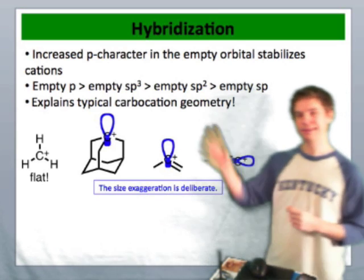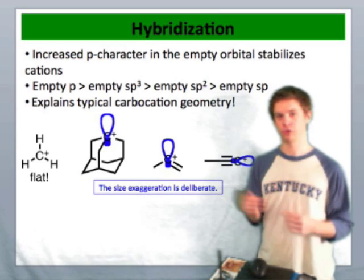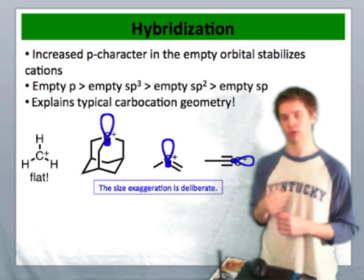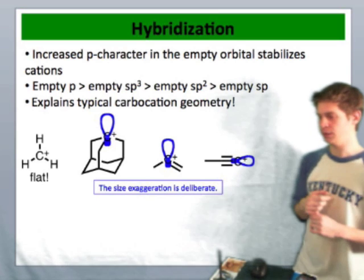This is slightly less stable than the pure 2p orbital because we've introduced s character, pulled that orbital slightly closer to the nucleus than the 2p orbital.